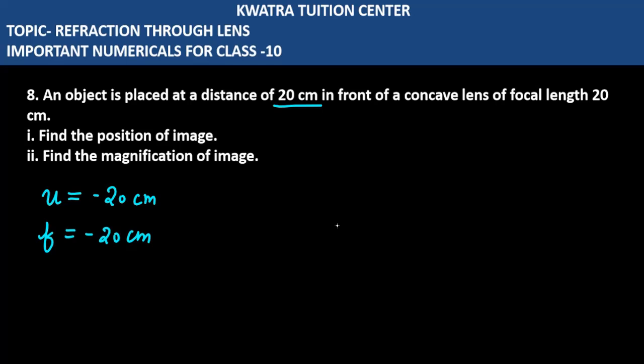Now, we need to find the position of the image. This means, what is v going to be? Our formula is 1 by v minus 1 by u is equal to 1 by f.